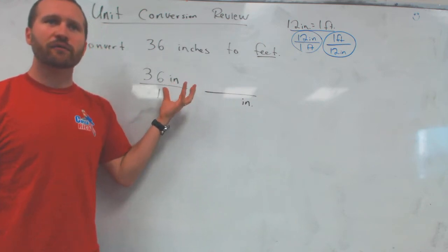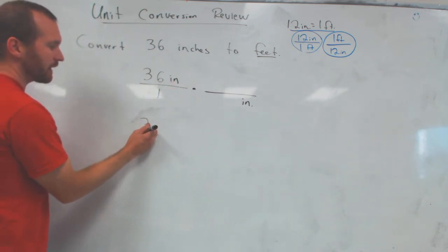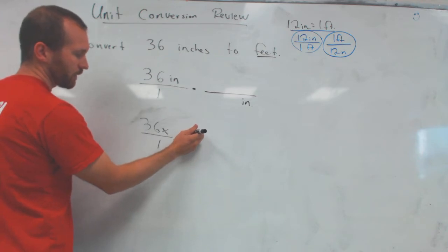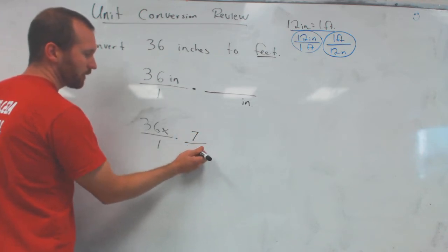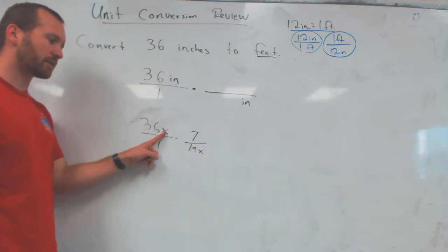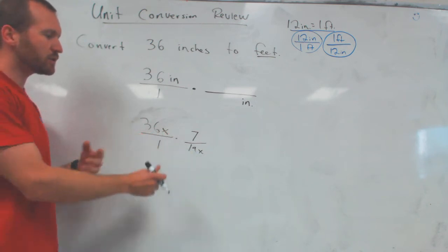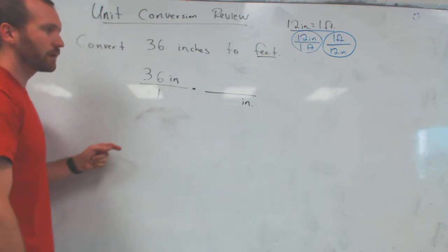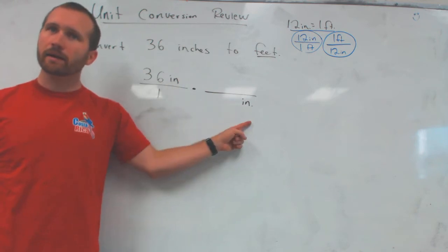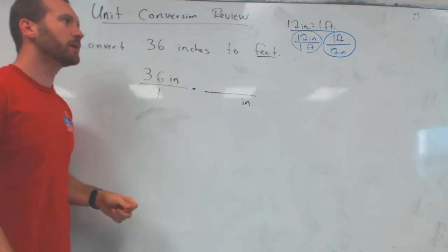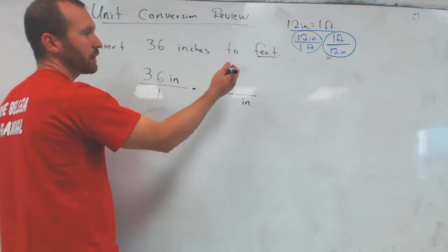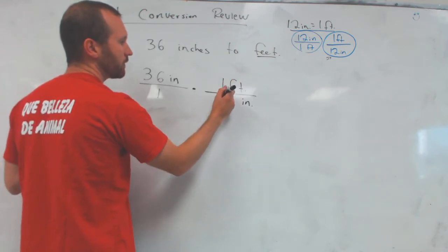I think of this almost like a variable. If I had something like 36x over 1 times 7 over 19x, I could cancel the x from the top and the bottom. So inches is sort of like a variable in algebra — it can be canceled out, but only if it's in the top and the bottom. Inches up top, inches down bottom. Which of these unit multipliers has inches in the bottom? This one does — so that's the one I'm going to use: 1 foot over 12 inches.